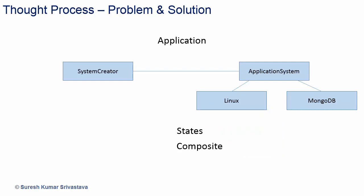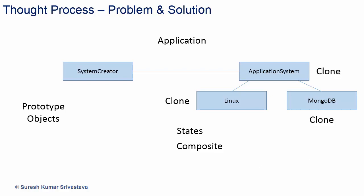What if the Linux object is a composite object and requires a lot of processing to create? Creating it is very expensive and creating it multiple times is not a good option. We will copy the object to avoid complexity. We will have prototype objects of all the classes at some place, and those will be used to clone the object to be created. We will have a clone method in each class, and that method will clone the object.